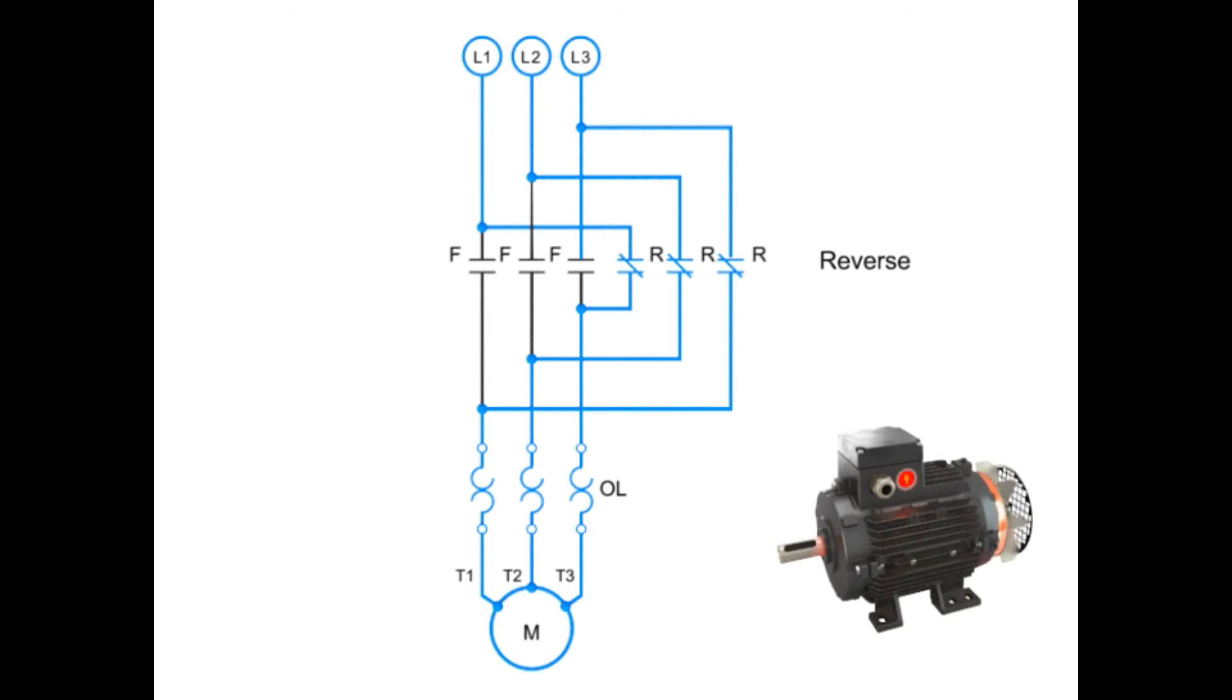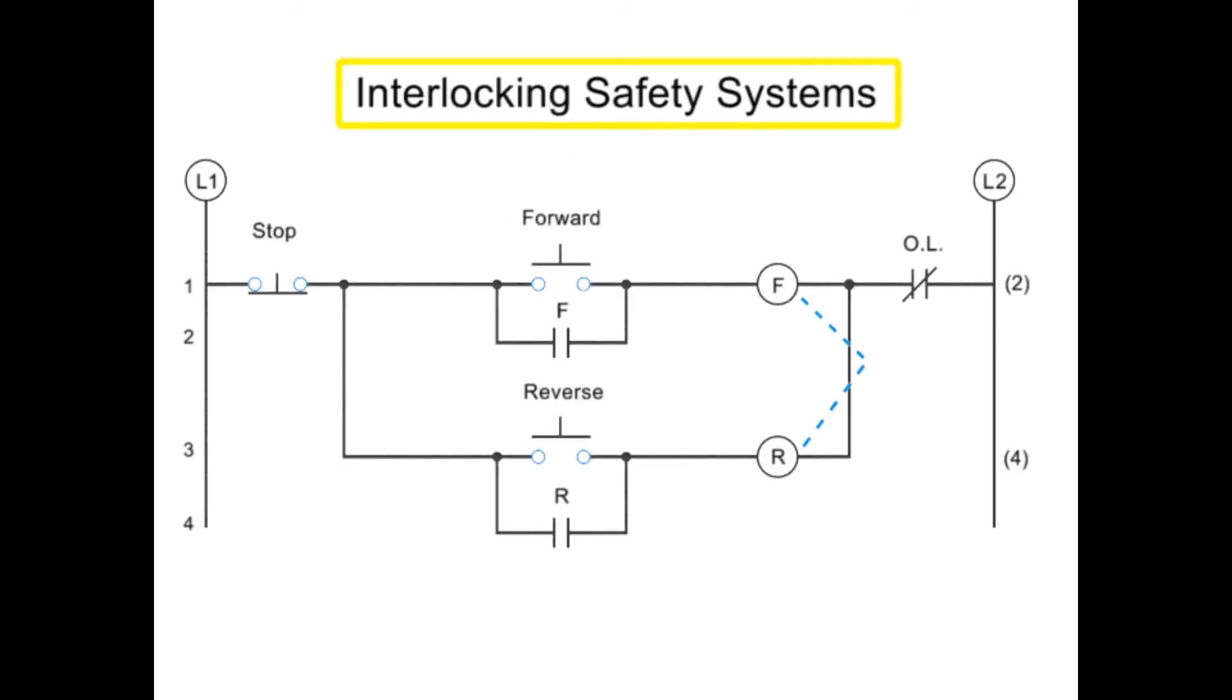In order to protect against this kind of short circuit, manufacturers employ three types of interlocking safety systems. Interlocks create a web of safety checks within a circuit to prevent both forward and reverse coils from being energized at the same time. They are represented in circuitry diagrams by a dotted line.